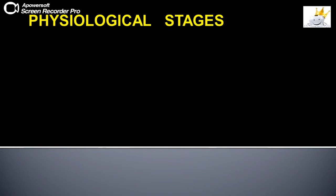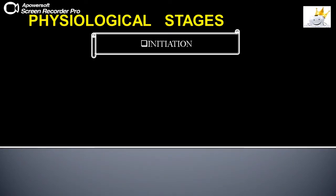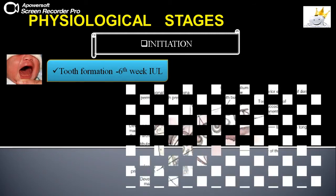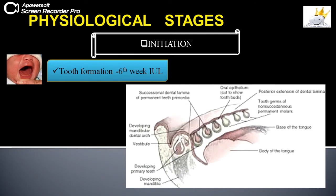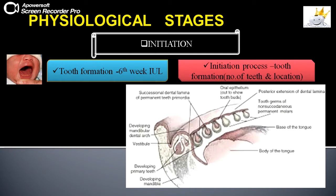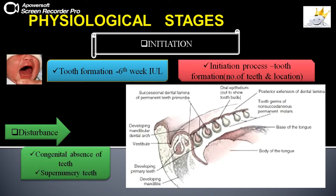Initiation: the evidence of tooth formation is observed as early as the sixth week of intrauterine life with the formation of the dental lamina. At 10 specific regions of this dental lamina, bud-like structures develop which form the primordia of the 10 deciduous teeth in each arch. Similarly, permanent teeth also develop from lingual and distal extensions of the dental lamina. The process of initiation decides the commencement of tooth formation, the number of teeth, and their location. Any disturbance in initiation leads to congenital absence of teeth due to lack of initiation, or supernumerary teeth due to continued budding off from the dental lamina.